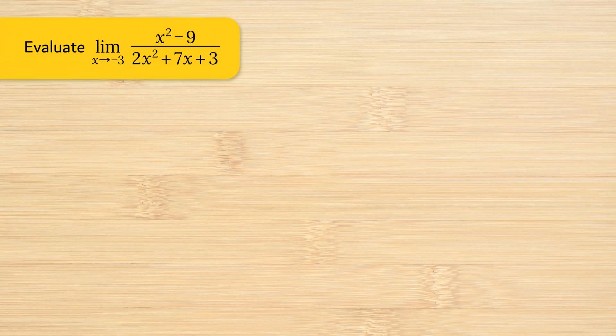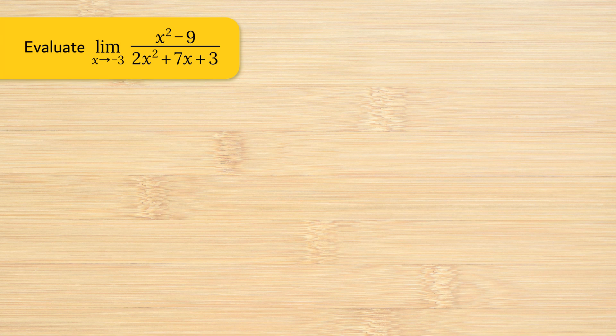Evaluate the limit as x approaches negative 3 in the function x squared minus 9 in the numerator divided by 2x squared plus 7x plus 3.